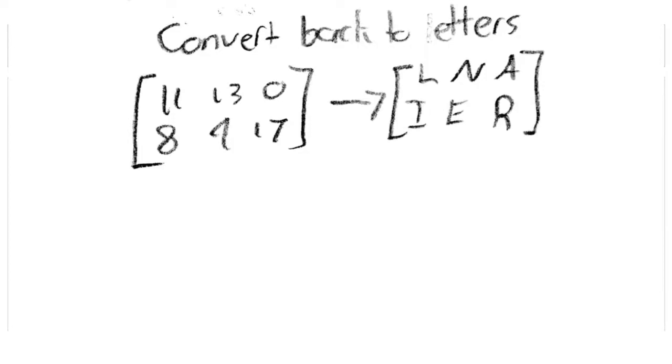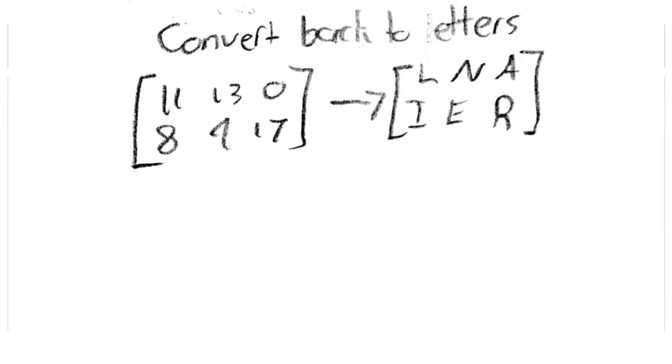Now that we have the same numerical matrix which we started with, we can easily convert it back from numbers to letters to reveal linear, our original message.